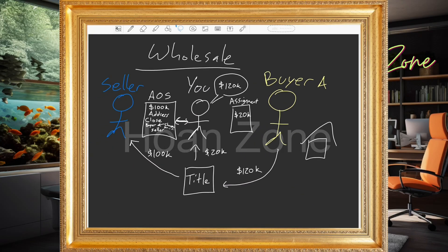Why is buyer A buying the property? It's because they want to be a fix and flipper, or they want to be a landlord and rent the property out — which are going to be our next examples.